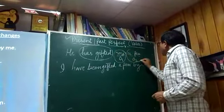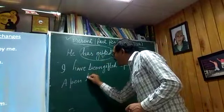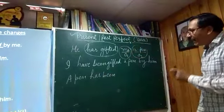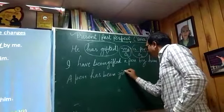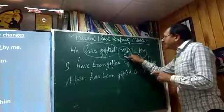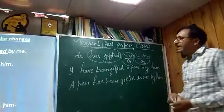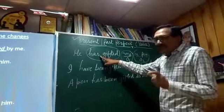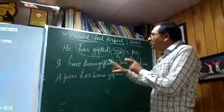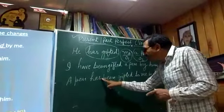If we use the second object 'a pen' as the new subject, we get: 'A pen has been gifted to me by him.' Notice 'me' remains as an objective pronoun here. In negative form it would be: 'A pen has not been gifted to me by him.'